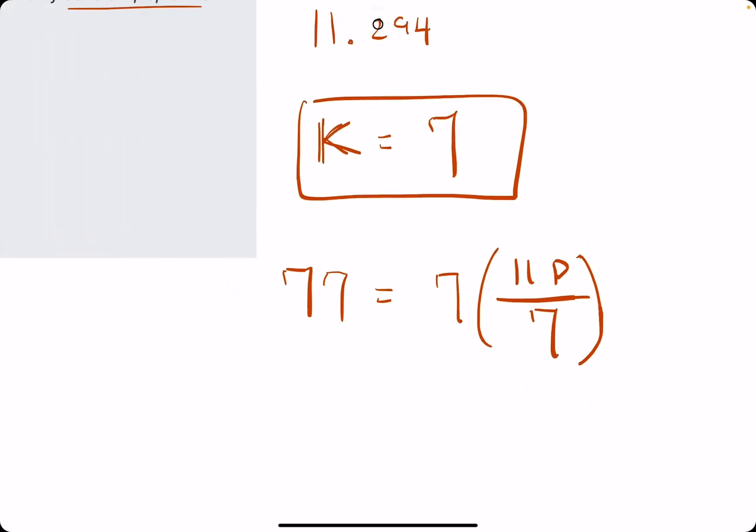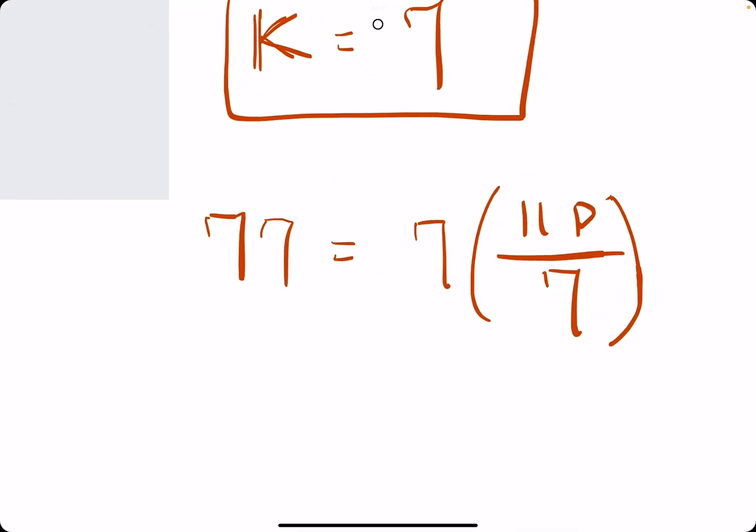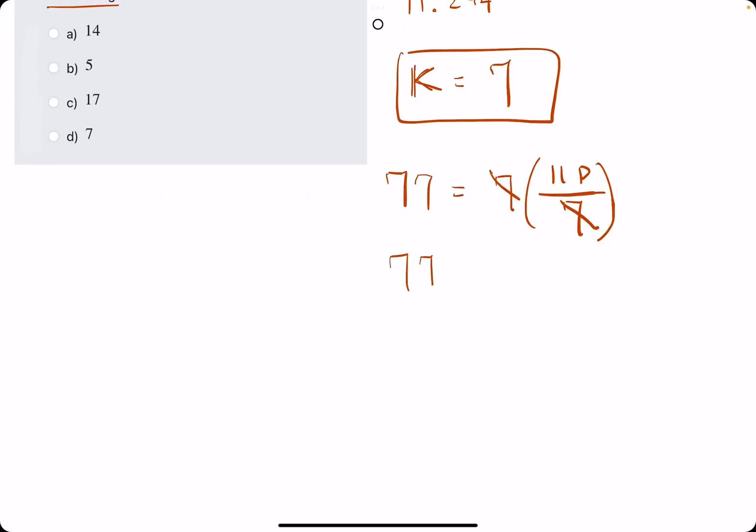Very nice looking equation here because what will happen is 7 on the outside will cancel with this 7 on the bottom, and all we're left with is 77 equals 11P.